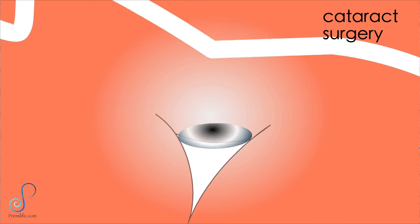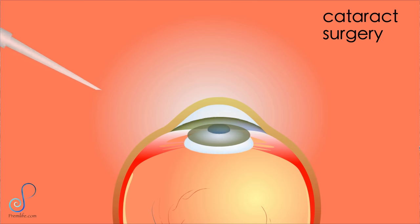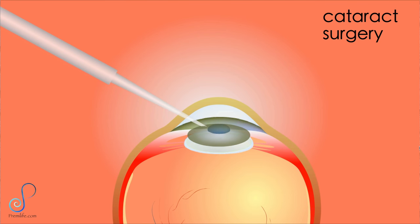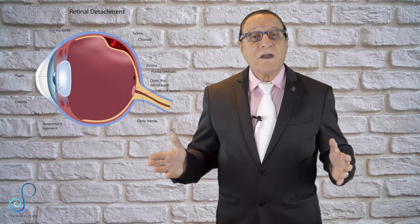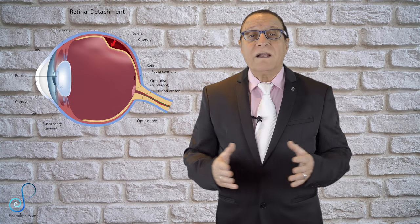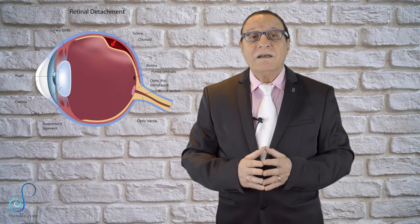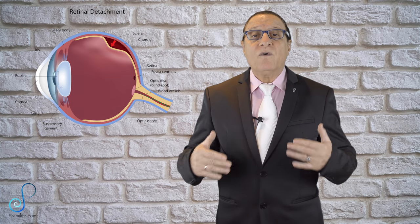The most common risk following macular hole surgery is an increase in the rate of cataract development. In many patients, a cataract can progress quickly and at times becomes complex enough to need removal. Other, less common risks include infection and retinal detachment either during or after surgery, both of which can be treated immediately. For some months after surgery, you are not allowed to travel by air, as changes in air pressure can trigger expansion of the bubble in the eye, which will increase the pressure inside the eye.